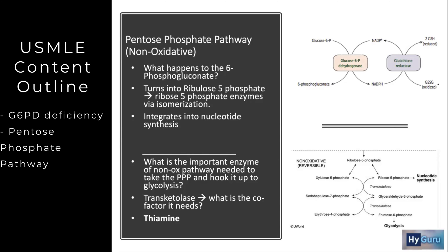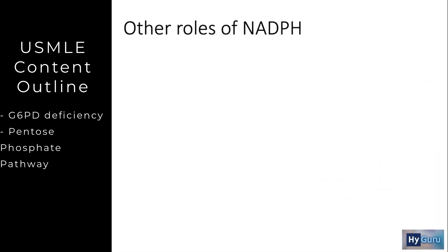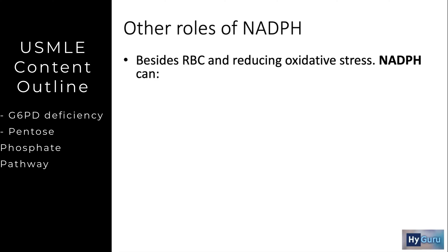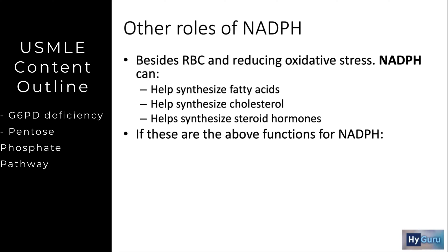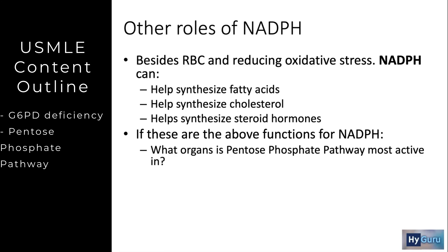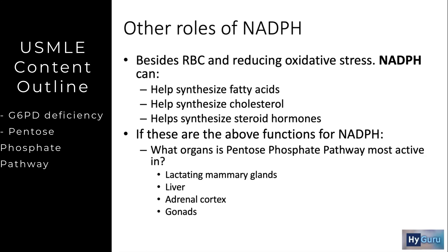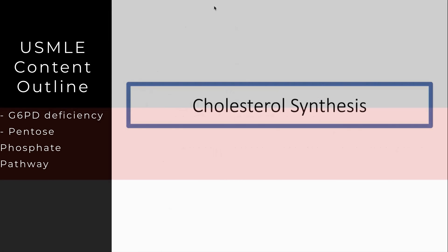To conclude our discussion of the pentose phosphate pathway: what is the role of NADPH? Consider NADPH as an anabolic substrate — it helps synthesize fatty acids, cholesterol, and steroid hormones. Because of these functions, the organs where the pentose phosphate pathway is most active are the lactating mammary glands (you need cholesterol, steroids, and fatty acids to make milk), the liver, the adrenal cortex, and the gonads. Keep NADPH in mind as you transition into studying the cholesterol synthesis pathway.